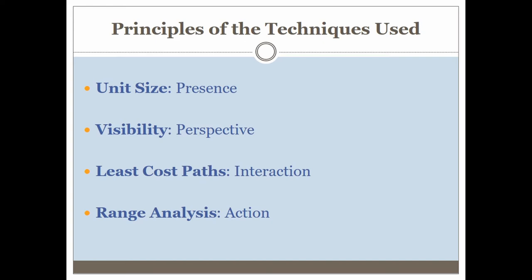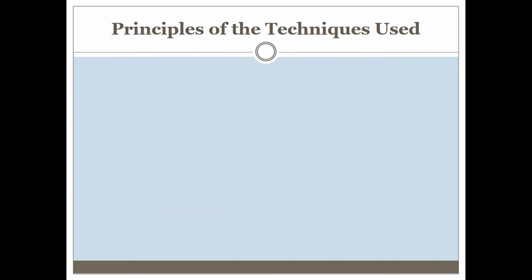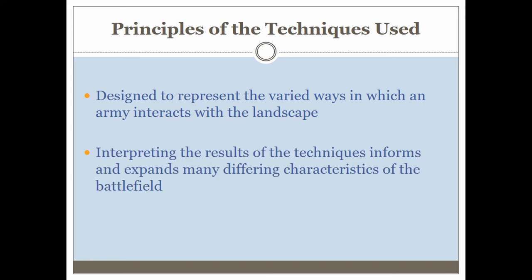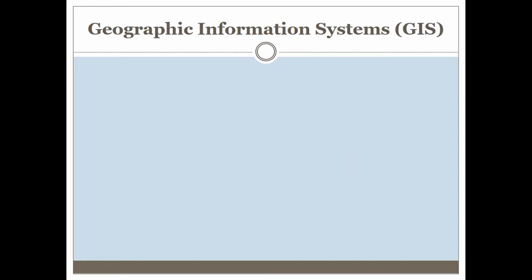These boil down to four things: presence in the landscape, perspective on the landscape, interaction with the landscape, and action in the landscape. These are designed to represent the varied ways in which an army interacts with the landscape. Fundamentally, these results must be interpreted — they are not absolute. Arrows don't vanish after 200 yards, they do something else, but this does give an interesting model for analyzing the landscape.